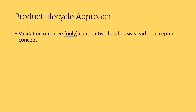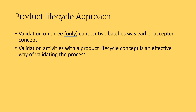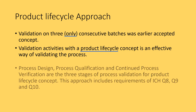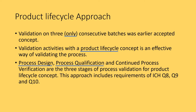Validation with a product life cycle approach is the current thinking. An approach which includes process design, process qualification, and continued process verification are the three stages of process validation for the product life cycle concept. This approach includes requirements of ICH Q8, Q9, and Q10. The process design goal is to develop a firm process suitable for routine commercial manufacturing that can consistently deliver the product that meets the quality attributes. The process design is well studied and established with data from a variety of design of experiments, done at the R&D development stage.